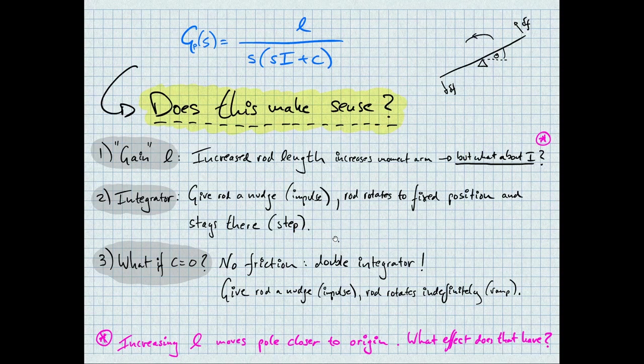Lastly, we can ask ourselves what happens if we change C. What happens if there's no friction? That means C equals zero. This means that we have two poles at the origin. So, if we have C equals zero, we have S squared in the denominator. That means we have a double integrator. If we give the rod a nudge, as in an impulse input, the rod will rotate indefinitely. And that is actually a ramp output. So, what we'd expect from a double integrator.